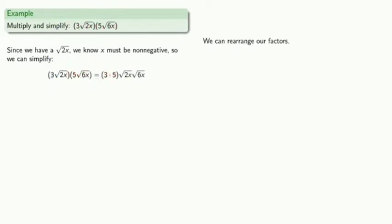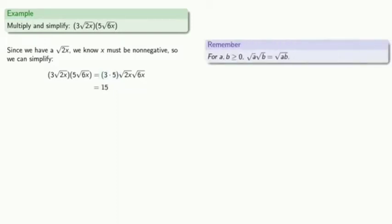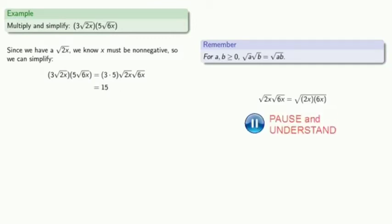We know how to multiply 3 by 5, so let's go ahead and do that. Remember that as long as our radicands are non-negative, the product of square roots is the square root of the product. So square root of 2x times square root of 6x is the same as the square root of 2x times 6x, which simplifies.